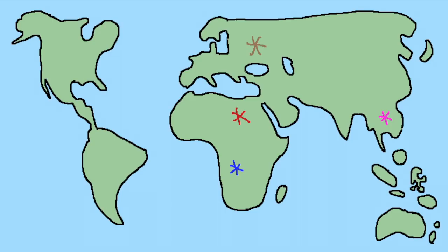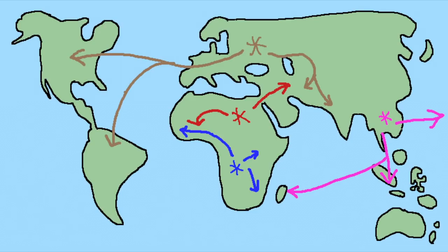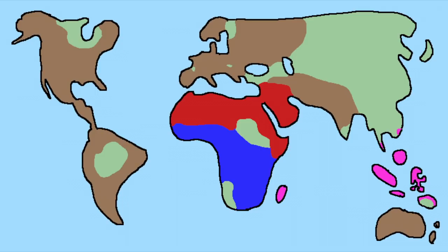Maybe language was invented multiple times independently, and modern languages are descended from different first languages. Thing is, we don't really know how language first happened.